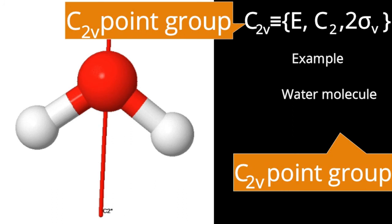Here we are not representing elements; we are representing operations possible on that element. How many unique distinguishing operations are possible around C2? Only one operation. So I am mentioning C2.